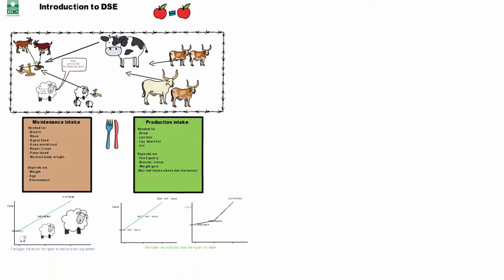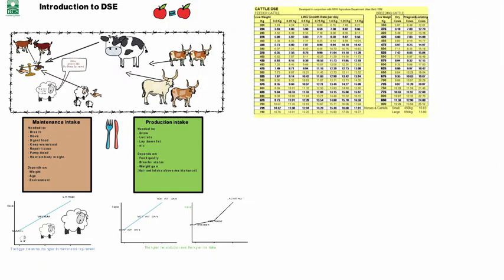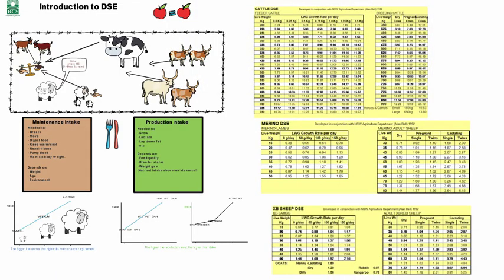Pulling all that together, these DSE tables were created which gave you the DSE rating for individual animals at different weights, different levels of productivity, and different types.